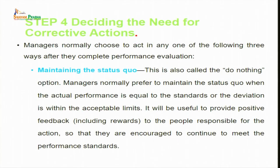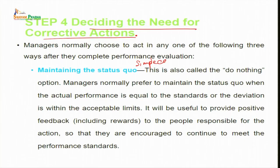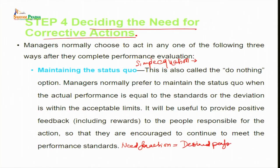Step four is deciding the need for corrective action. Based on the results of comparison, managers will determine the need for corrective actions. There is a simple equation useful for better understanding: need for action = desired performance minus actual performance. The manager has to follow this.